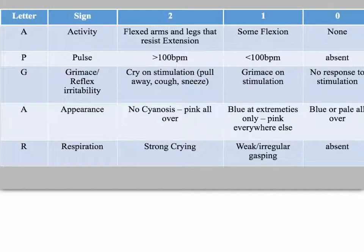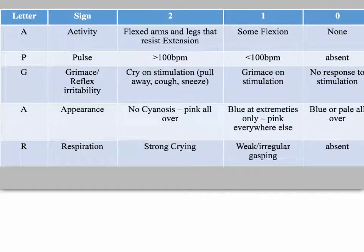Grimace refers to reflex irritability. Basically, if you stimulate the baby — poke it or spank it — does it cry? A score of 2 is for crying or other reflexes like pulling away, coughing, and sneezing. If the baby only grimaces on stimulation but doesn't cry, that's a score of 1. No response is a score of 0.